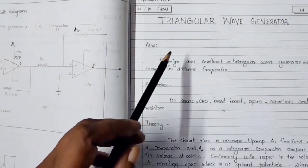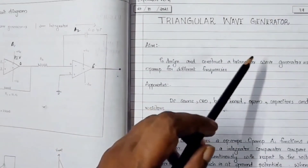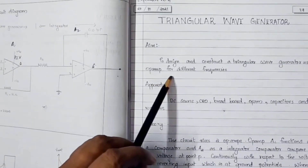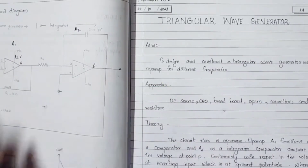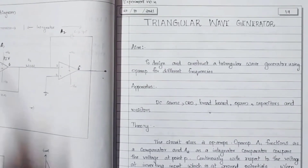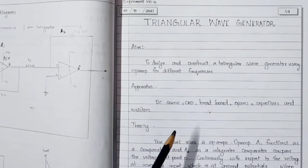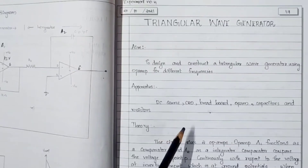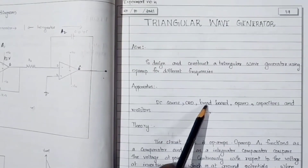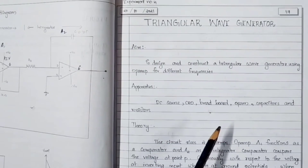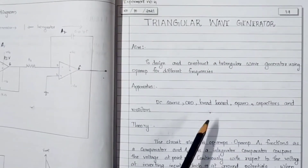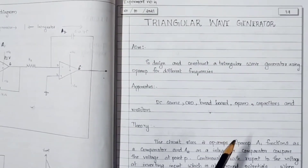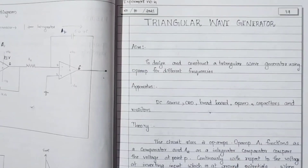Today let us discuss the triangular wave generator. We have to design and construct the triangular wave generator using op-amps for different frequencies. In this video we will be discussing the design of the circuit, the circuit diagram, theory of wave formation, and practical observation and tabulation.